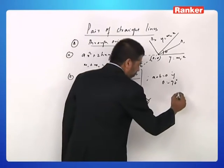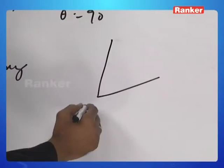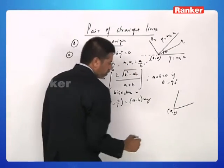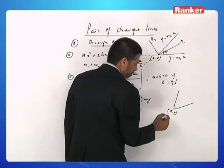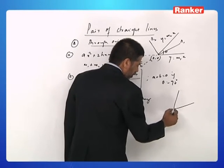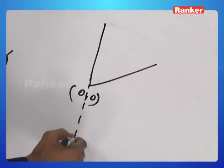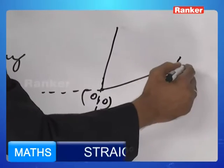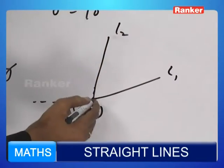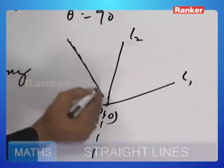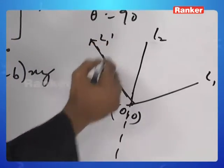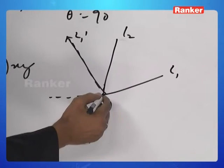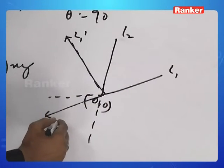Suppose we have a pair of straight lines passing through the origin and we want a pair which is perpendicular to this pair. Suppose you take the first line, let us say this is l1, this is l2, and you draw a line perpendicular to it. I will call this l1 dash, and to this you draw another line which is perpendicular, l2 dash.